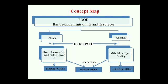Finally, what did we study in this chapter? We studied that food is the basic requirement of life and it has two sources — the plant source and the animal source. The edible parts obtained from plants are roots, leaves, stems, fruits and flowers. Milk, meat, eggs and poultry are the edible parts obtained from animals. Plants and animals both are eaten by omnivores. Only plants are eaten by herbivores and only animals are eaten by carnivores. This brings us to the end of the chapter.